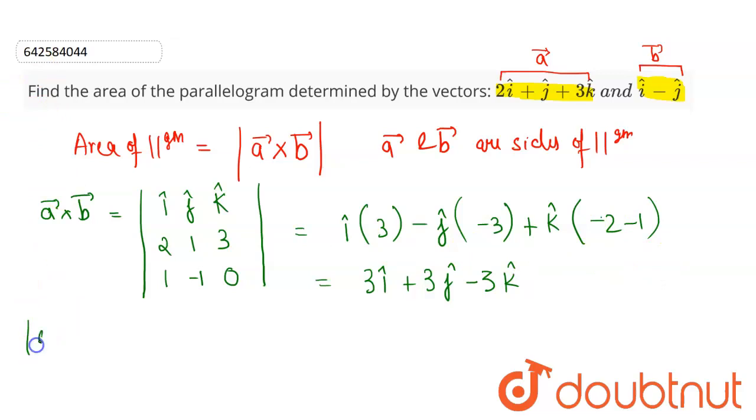Now magnitude of a vector cross b vector is, so this will be under square root of sum of squares of all the coefficient of i cap, j cap and k cap. So this will be 3 square plus 3 square plus minus 3 square. So this will be 3 square is 9, and minus 3 square is also 9.